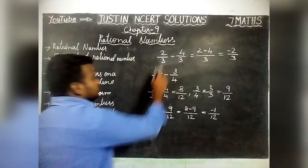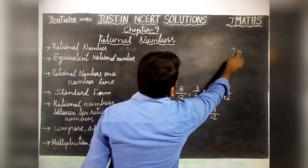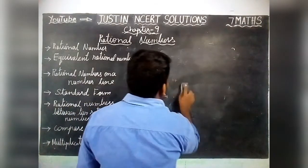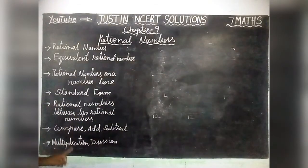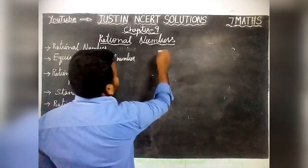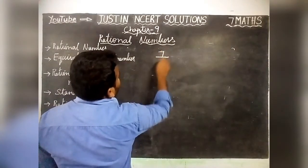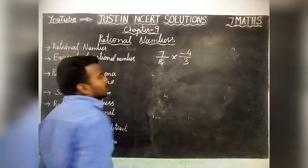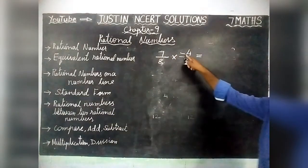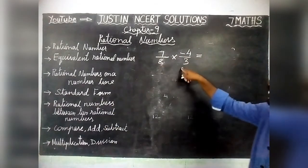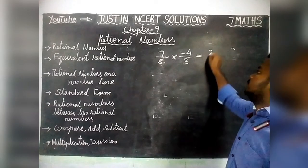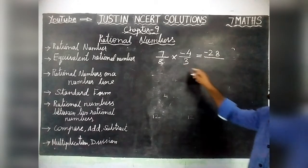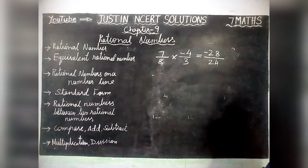Next, Multiplication and Division. For multiplication, we take 7 by 8 multiplied by minus 4 by 3. Just multiply numerator by numerator and denominator by denominator. 7 times 4 is 28, and plus into minus gives minus. Denominator: 8 times 3 is 24. So the answer is minus 28 by 24.